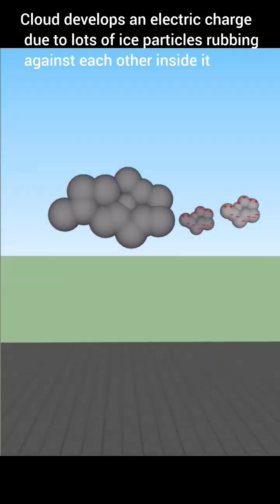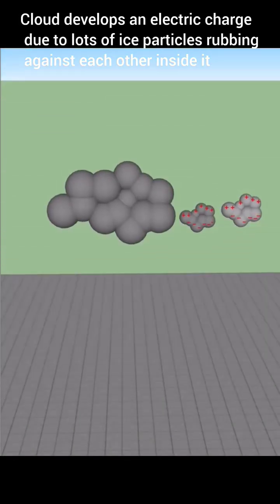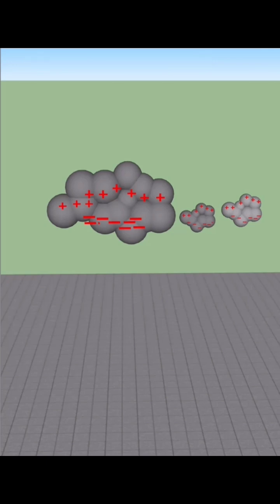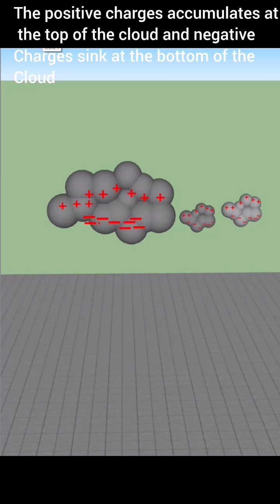Clouds develop an electric charge due to lots of ice particles rubbing against each other inside them. The positive charges accumulate at the top of the cloud and negative charges sink at the bottom of the cloud.